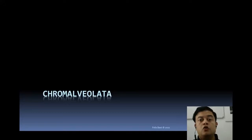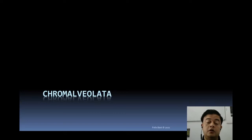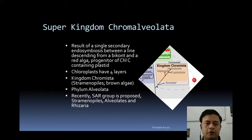Chromalveolata is one of the very important kingdoms by Cavalier-Smith's classification. So what is Chromalveolata all about? It's a super kingdom that encompasses kingdom Chromista and Alveolates, as per the name — an agglutination of the two separate words 'chrome' and 'alveolate.'